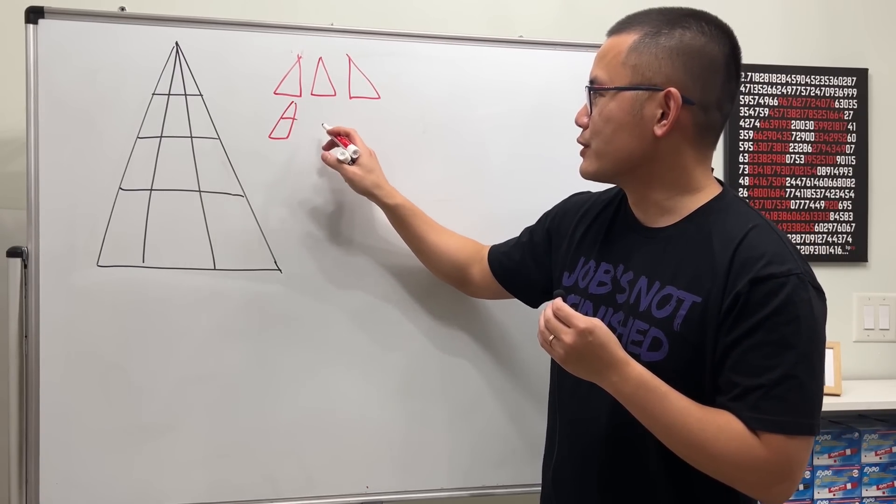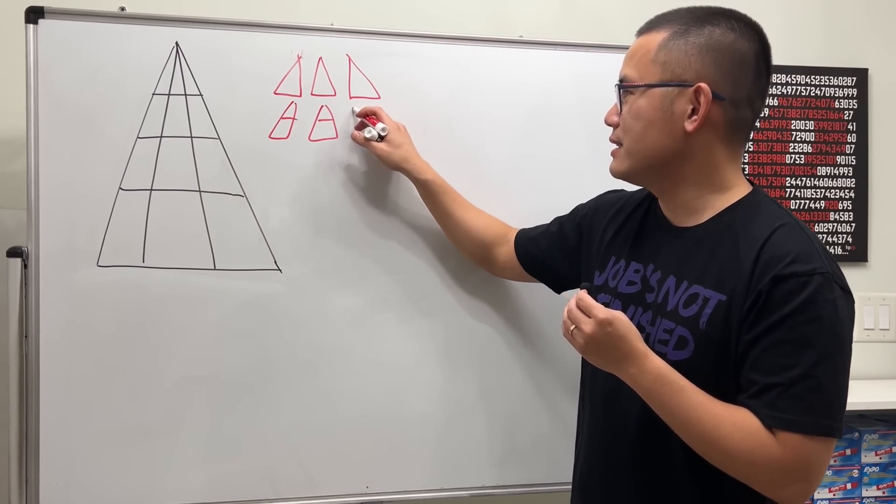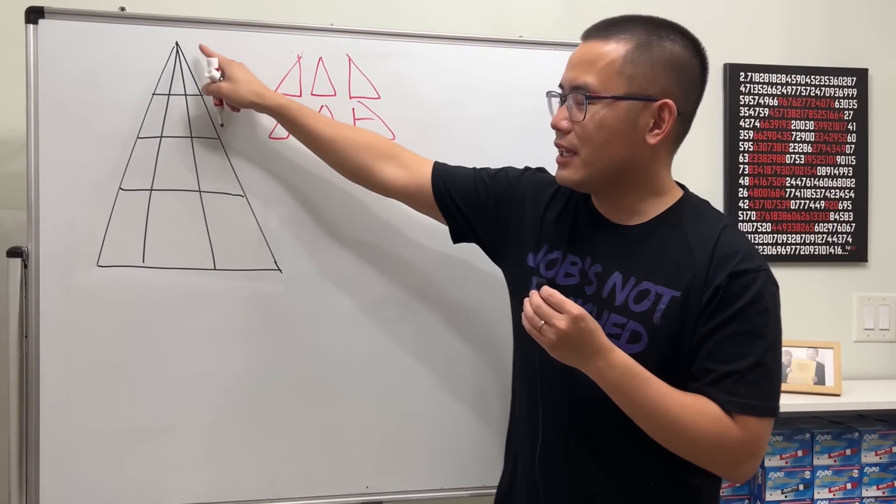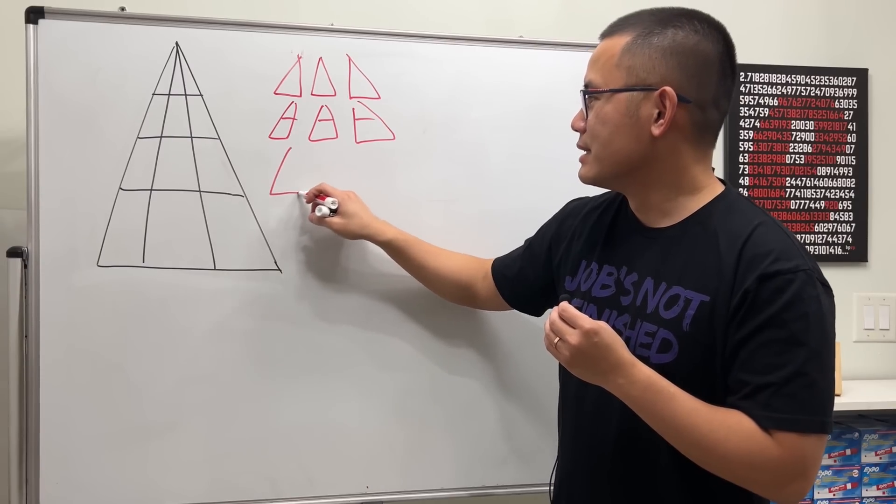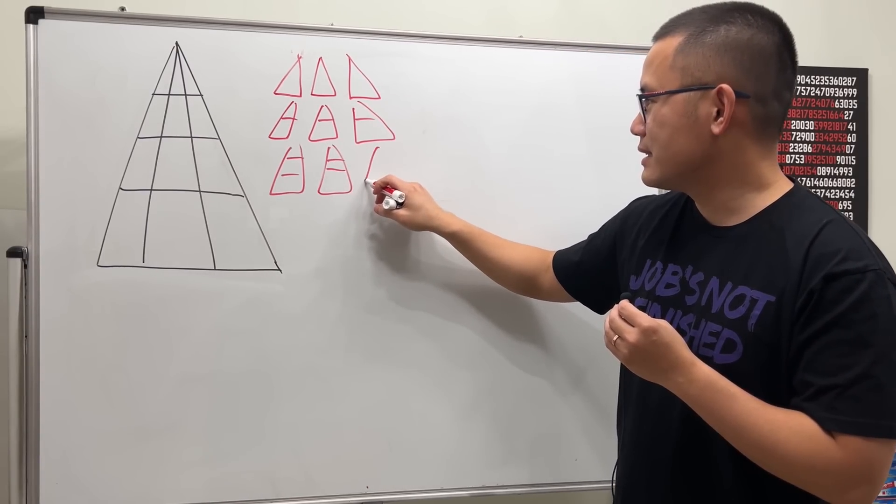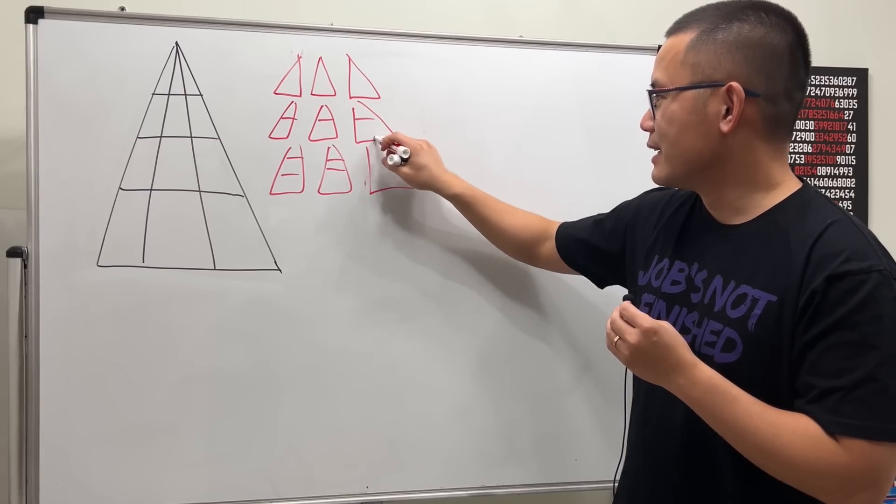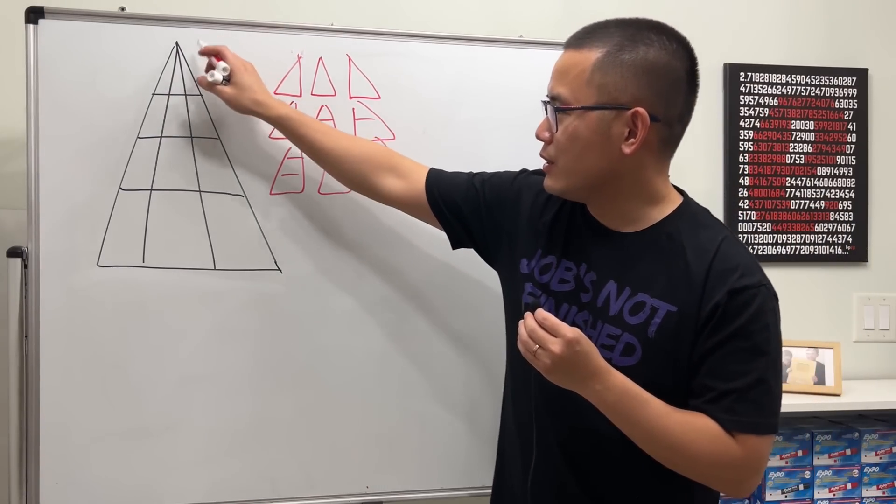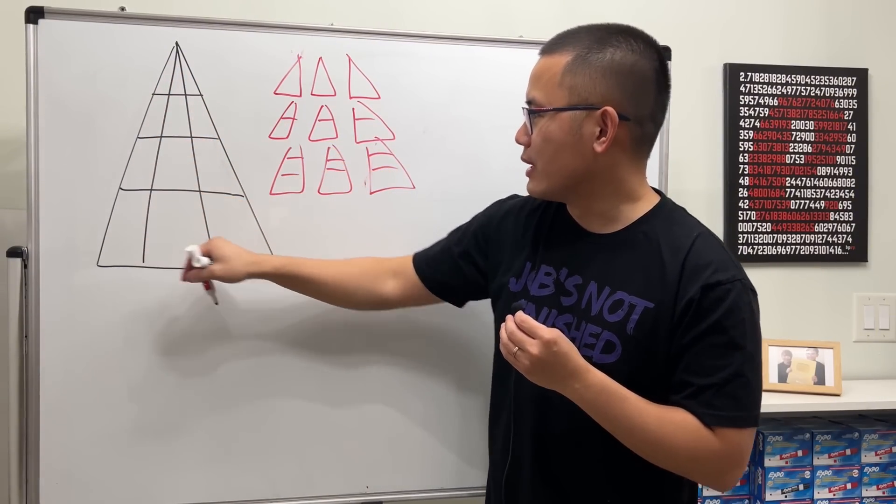So you can have the longer version like this, and also the longer version like this, and also the longer version like this. And then you can even make it even longer, so this long, this version, like this and like this.